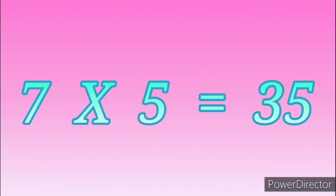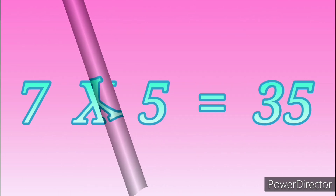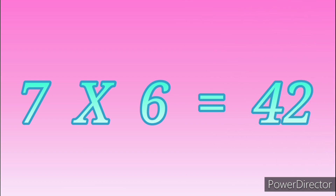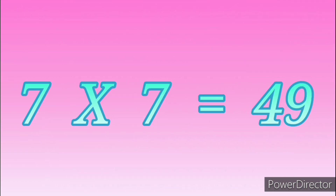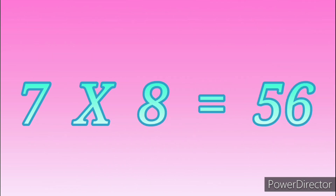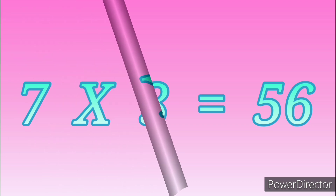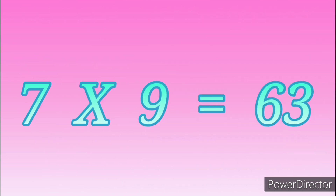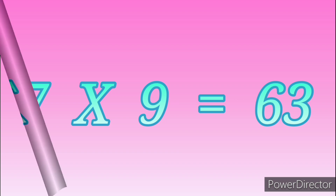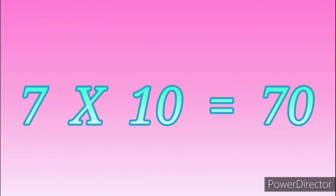7 fives are 35. 7 sixes are 42. 7 sevens are 49. 7 eights are 56. 7 nines are 63. 7 tens are 70.